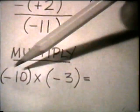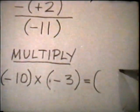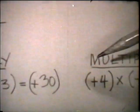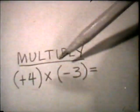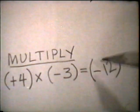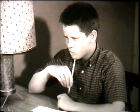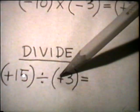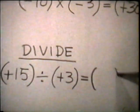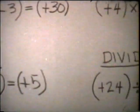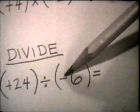The rules for multiplication: when multiplying two numbers with like signs, the product is positive. When multiplying two numbers with unlike signs, the product is negative. The rules for division are the same as those for multiplication. The quotient of two numbers with like signs is positive, and the quotient of two numbers with unlike signs is negative.